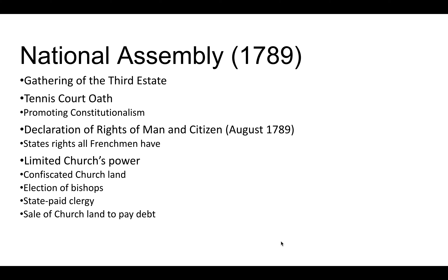In this lecture we're going to be talking about the different elements of the French Revolution and how it evolves over time. The French Revolution begins in 1789 when the Estates General is called and the Third Estate breaks away and forms their own institution known as the National Assembly.